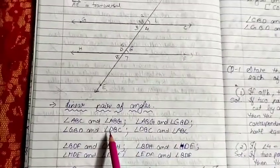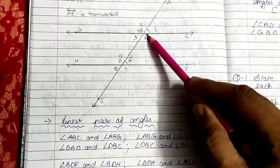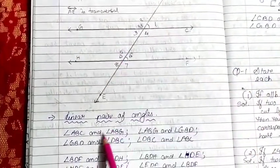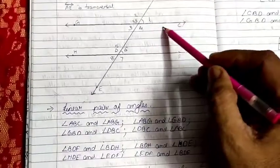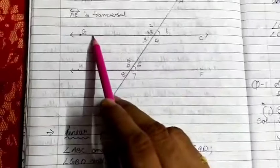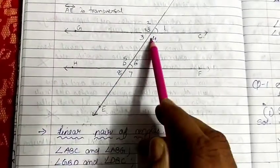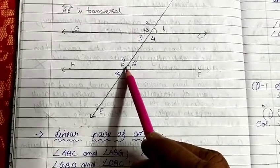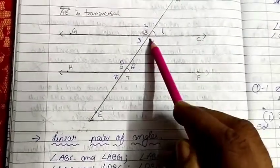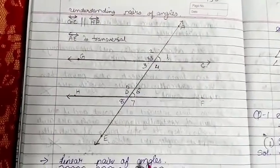Let us see all the angles with names. Angle ABC and angle ABG form a linear pair. Then ABG plus GBD, then GBD plus DBC, then angle DBC plus angle ABC — these are all pairs of linear angles.